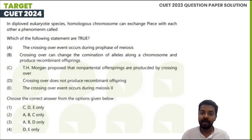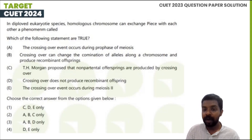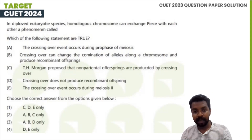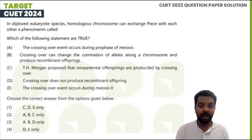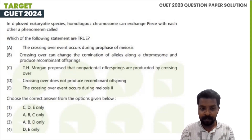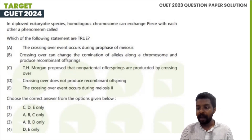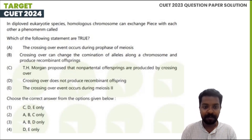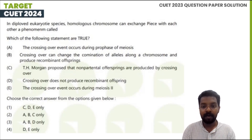T.H. Morgan proposed that non-parental offspring are produced by crossing over. That is T.H. Morgan's major postulate — the crossing over will produce non-parental offspring. This is the third statement. The crossover does not produce recombinant offspring.